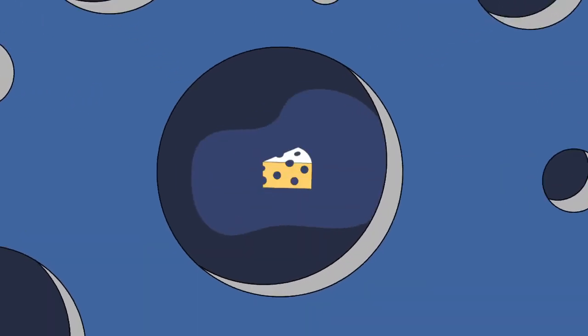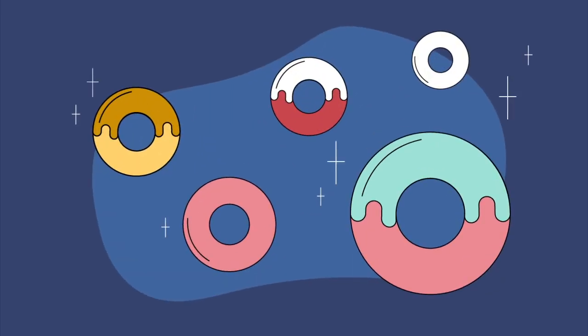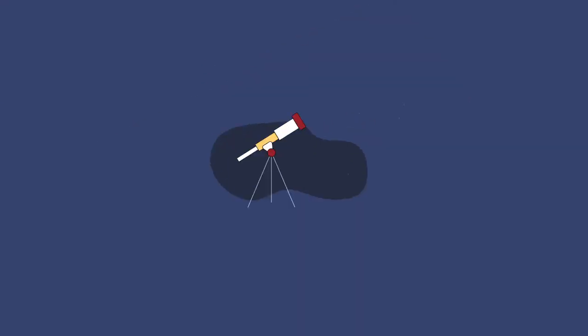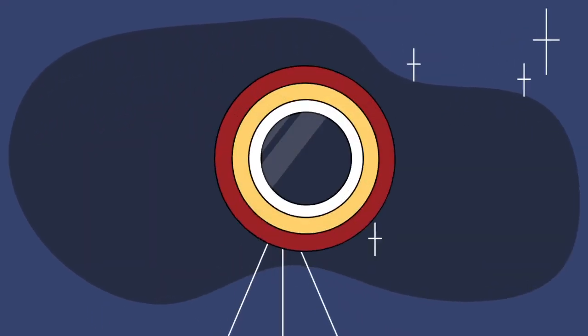Holes. Big ones. Small ones. When they're where they're supposed to be, like in cheese, or doughnuts, or shoes, or even in telescopes, they're extremely useful.